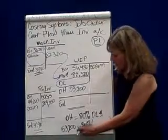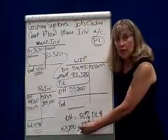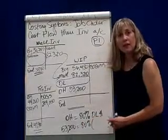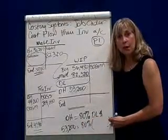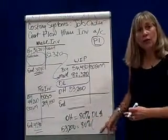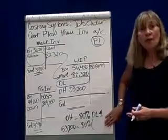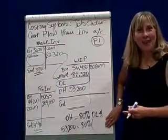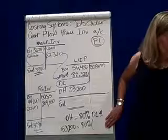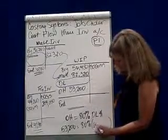So if overhead is $53,200, then that is 80% of the direct labor cost. If I take $53,200 and divide it by 80%, will I find my direct labor costs? Yes, we will — magic of math. And that gives us $66,500.